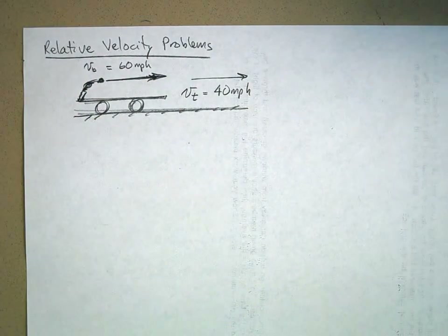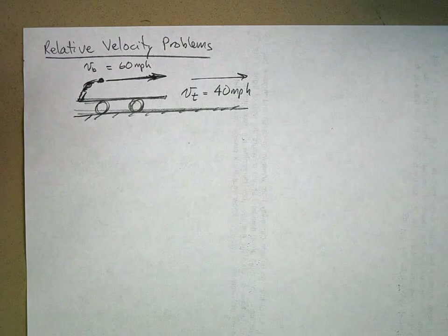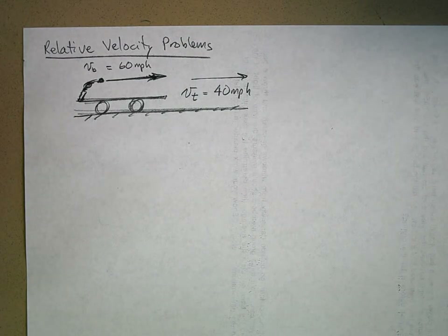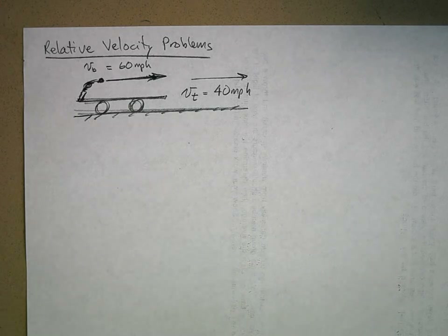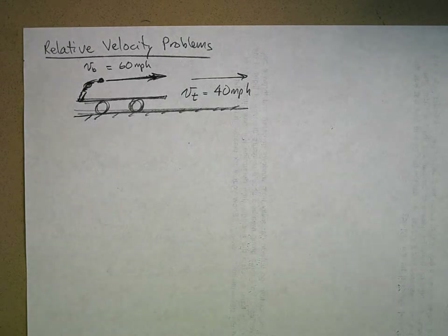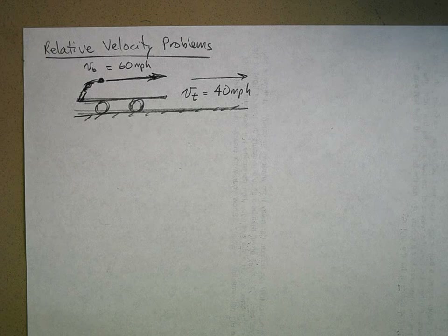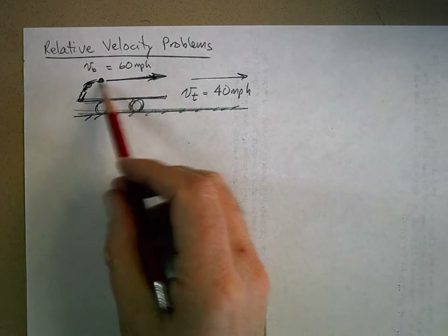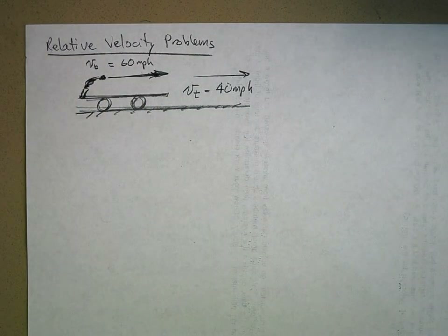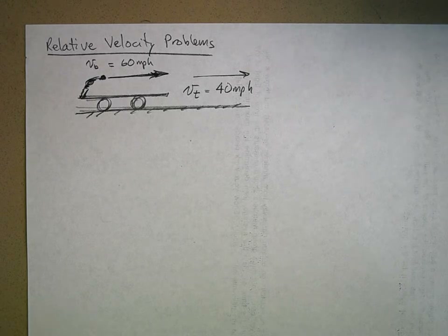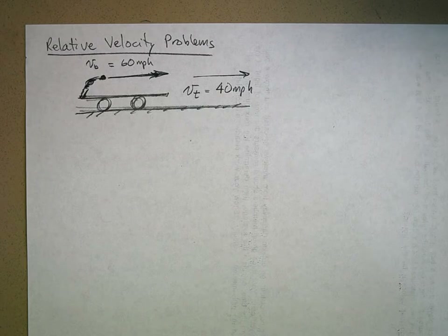Now, when he was throwing at full speed, he'd throw 95 to 100 miles an hour as a left-hander — that's why he's playing in the major leagues. But my question to you is: is that really the velocity of the ball? What do we mean by the velocity of the ball? This is the velocity of the ball as it came out of his hand — compared to what? When you tell somebody how fast something's going, you have to say compared to what.